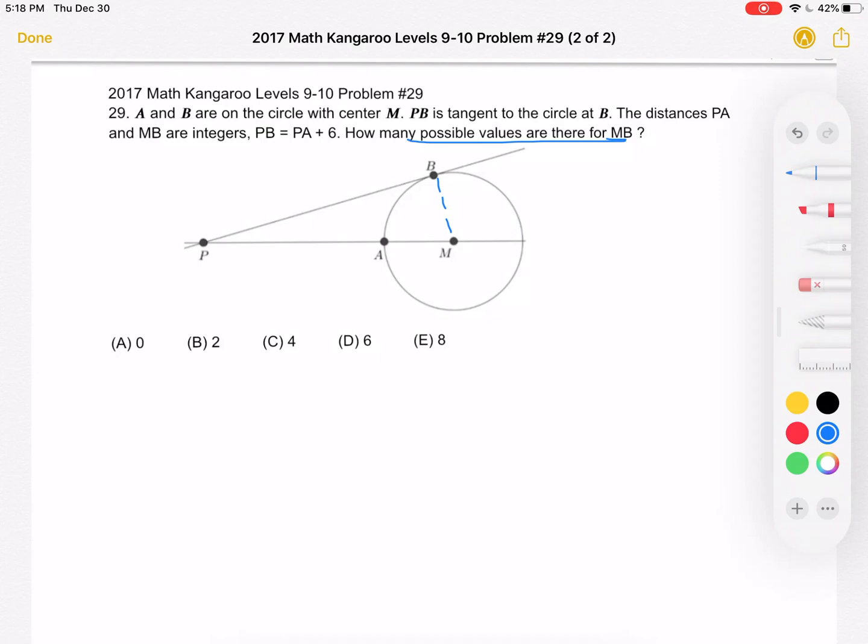We also know that PB is tangent to the circle at B. So there's a right angle located right here.